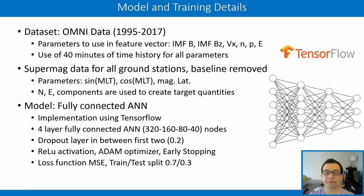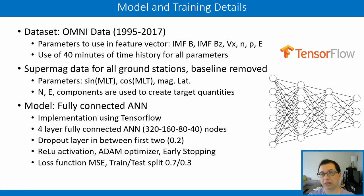For each parameter, we included the time history of the previous 40 minutes of measurements to create a time-dependent neural network. For the ground magnetic perturbations, we used baseline-removed SuperMAG data. MLT and latitude were used as training features, and from the N and E components we created our target parameters. We implemented a feed-forward neural network using the Keras TensorFlow framework in Python — a fully-connected four-layer ANN with 320 nodes in the first hidden layer and half the nodes in each subsequent layer. A dropout rate of 0.2 was imposed between the first two hidden layers as regularization to reduce overfitting, with a sequential 70/30 train-test split and mean square error as the loss function.